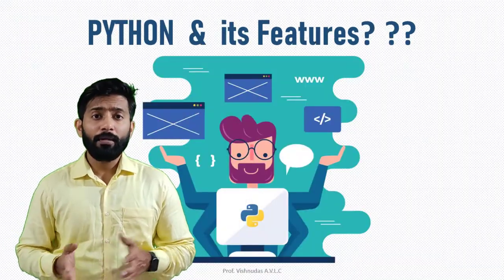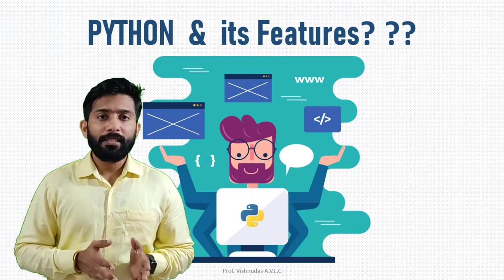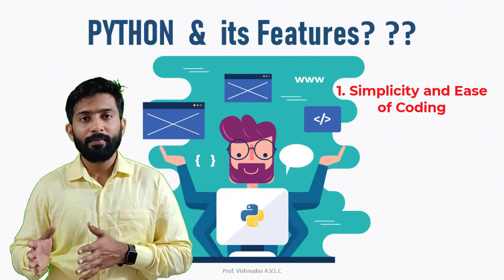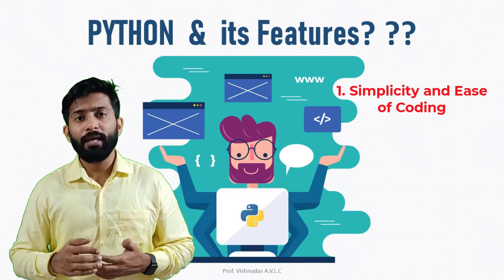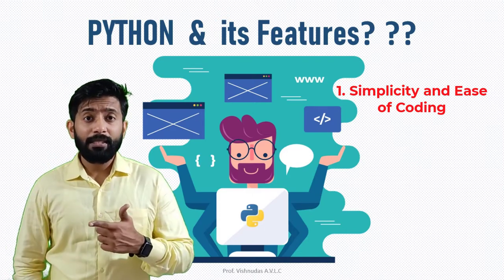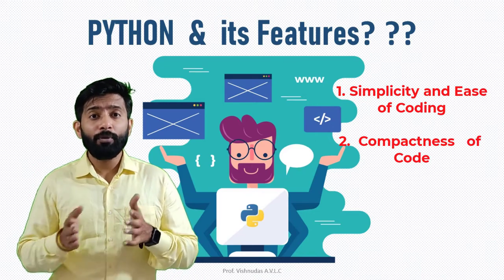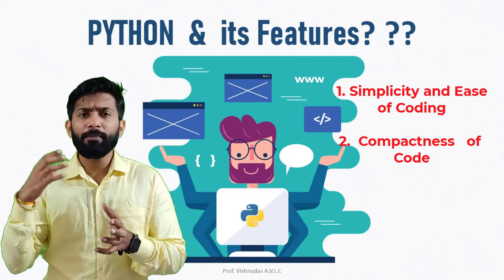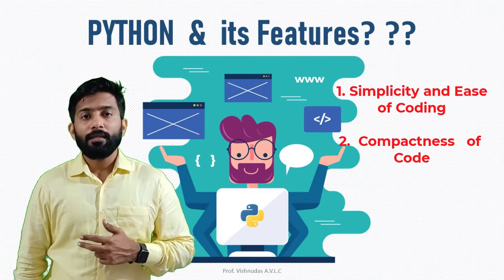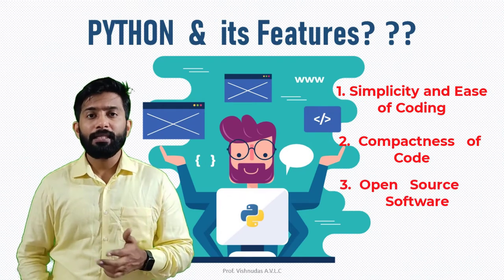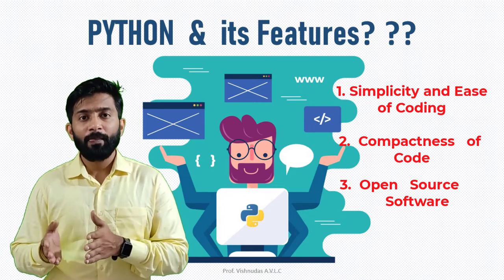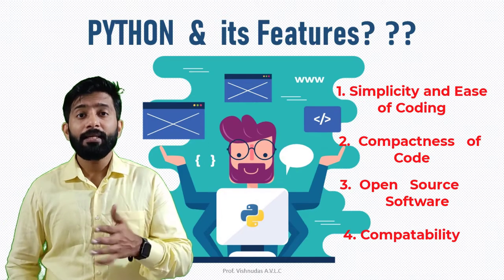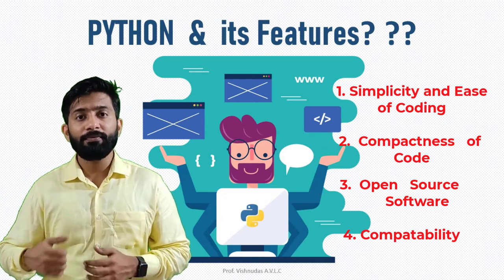What distinguishes Python from other programming languages, making it so widely used? Its features. The first feature is simplicity and ease of coding — Python is a pseudo code, meaning it reads like simple English; if given a new piece of code, you can read it and understand what it does. The second feature is compactness: a program that takes 15 lines in C or C++ takes only about 5 lines in Python. The third feature is that it is open source, meaning it is free of cost — you can just download and start using it. The last feature is compatibility: Python runs on all operating systems — Windows, Mac, Linux, and so on.